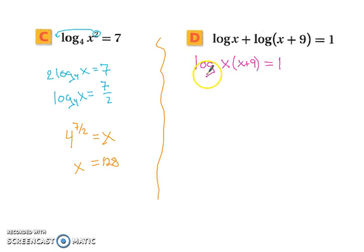And to get rid of our log, we're going to raise each of them up and we're going to use 10 as our base. So 10 to the power of log x times x plus 9 and 10 to the first power. So now we're left with x times x plus 9 equals 10.